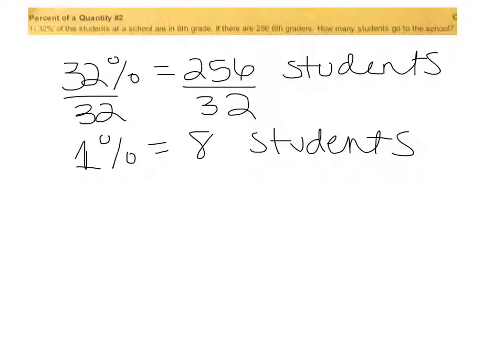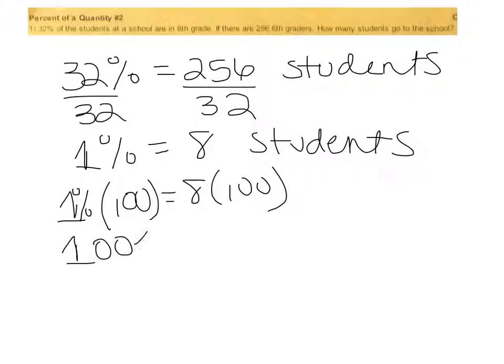So I'm going to take my 1% and multiply that by 100. I'll have to take my 8 students and multiply that by 100 as well, and I get that 100% of the students equals 800 students. Therefore, there are 800 students that go to the school.